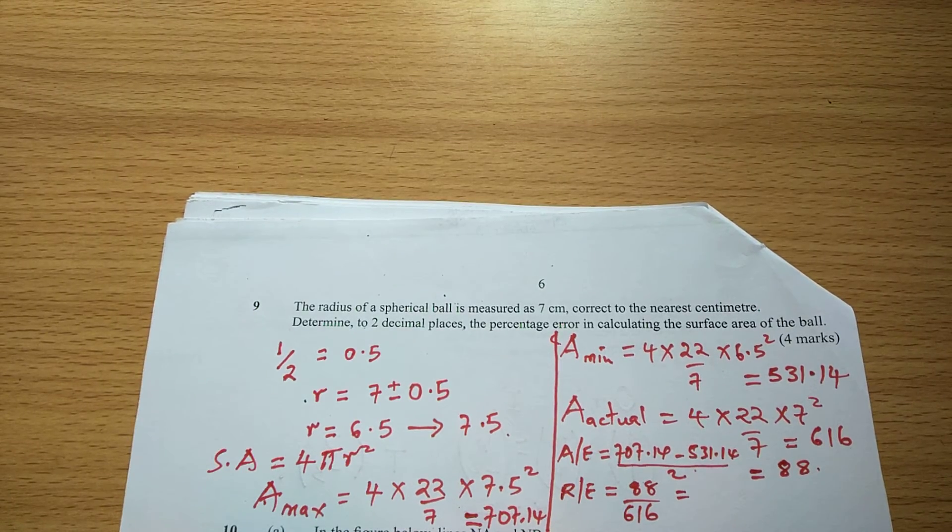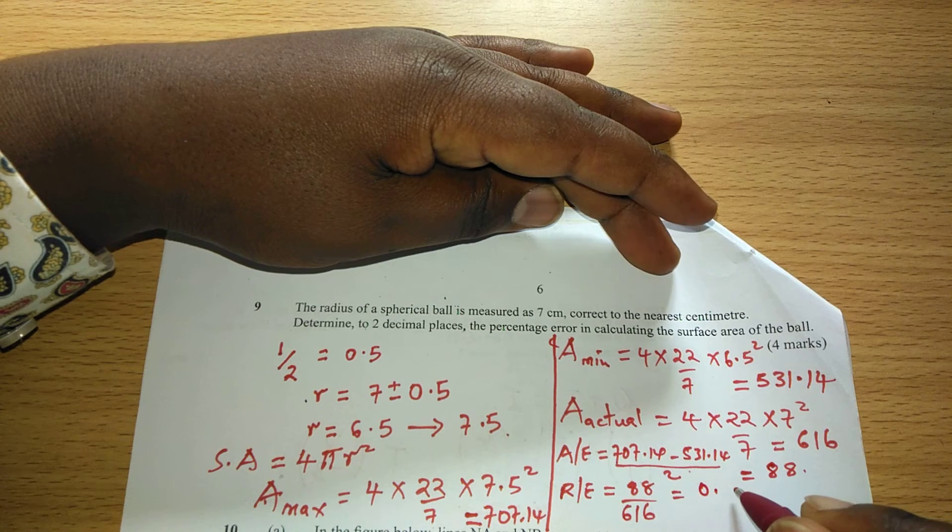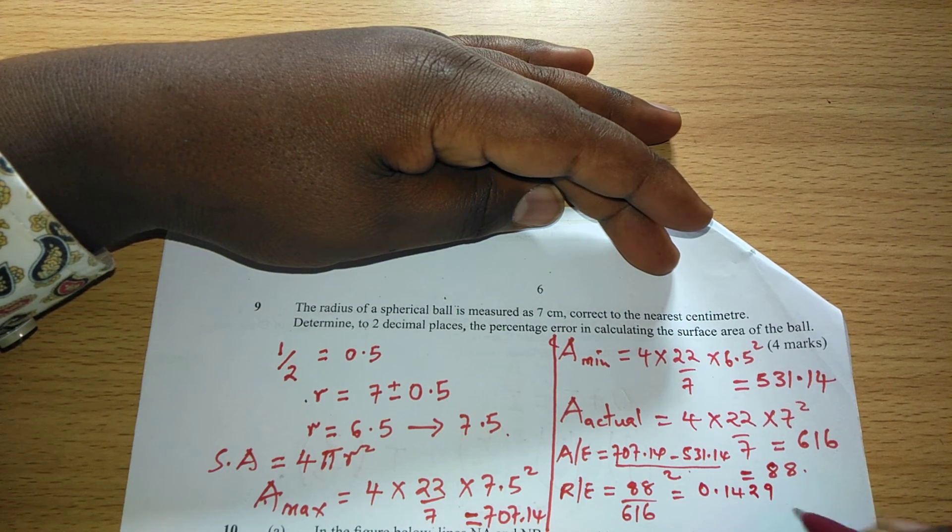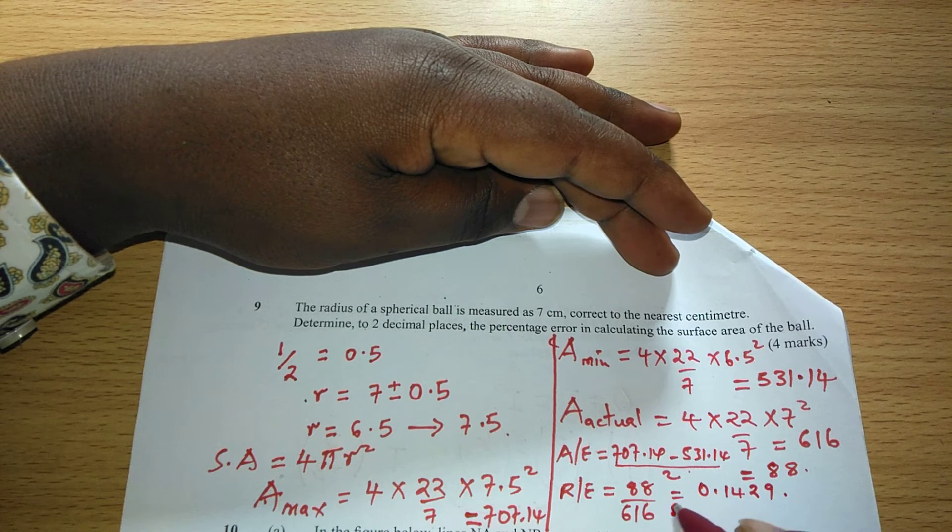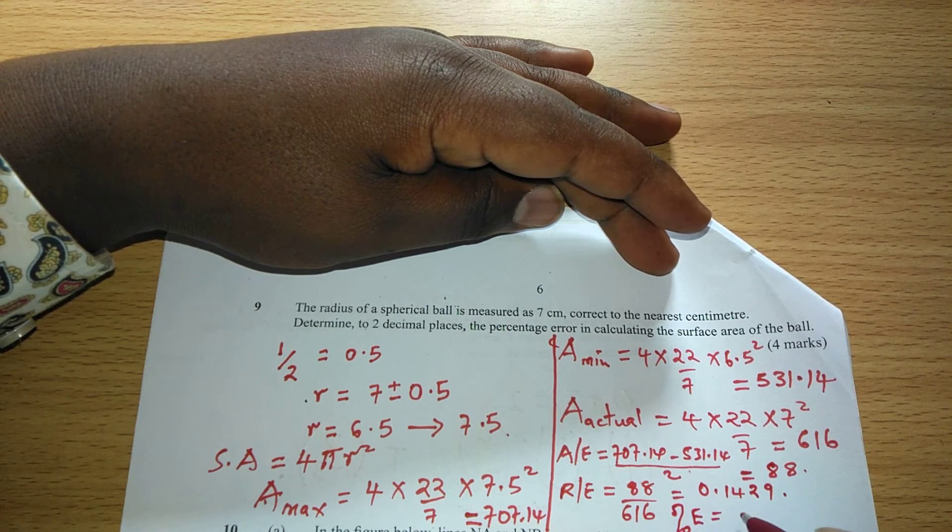This one is going to give us 0.1429. Therefore for us to get the percentage error now we take the relative error.